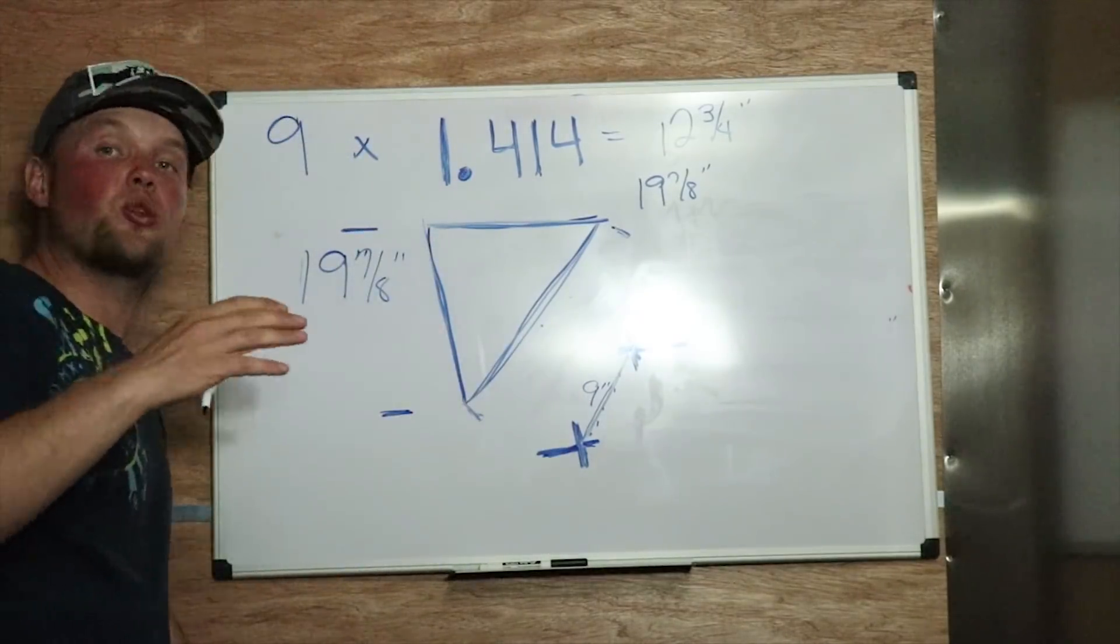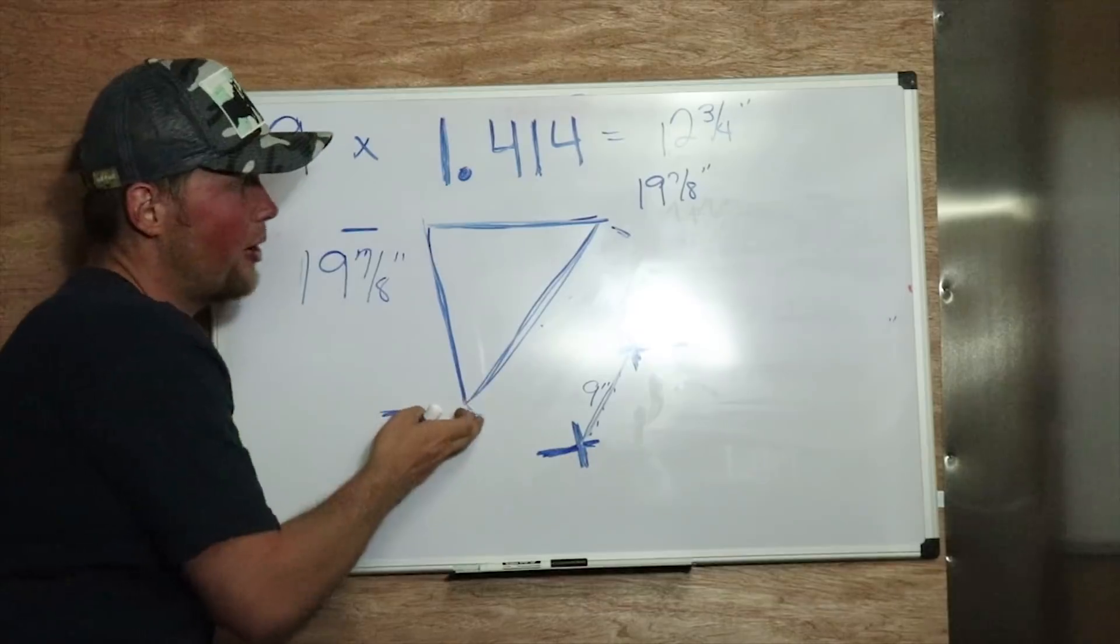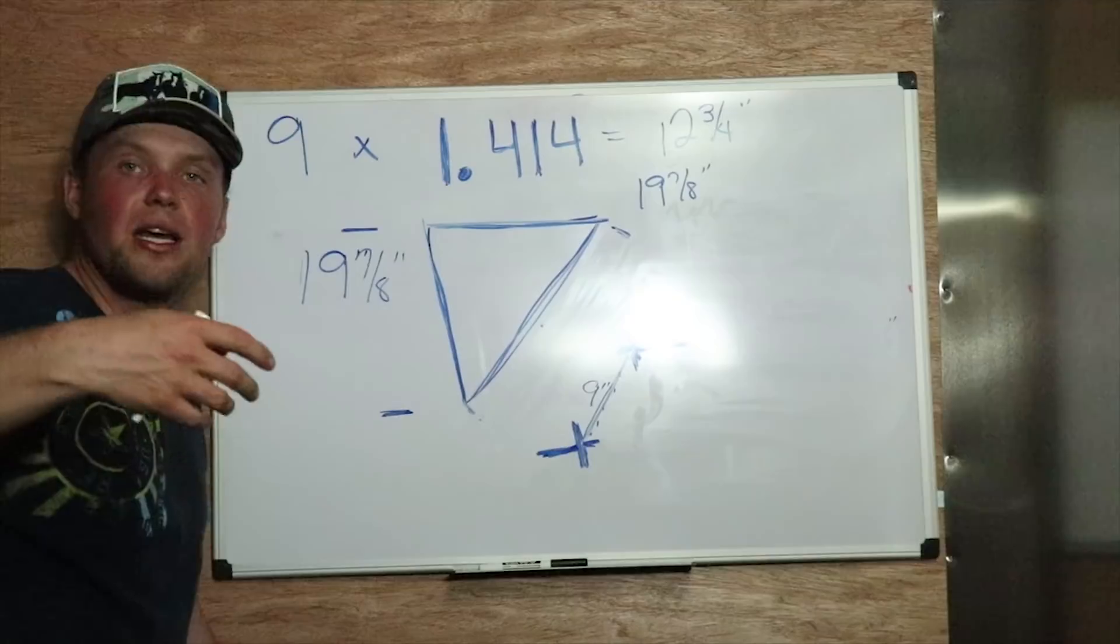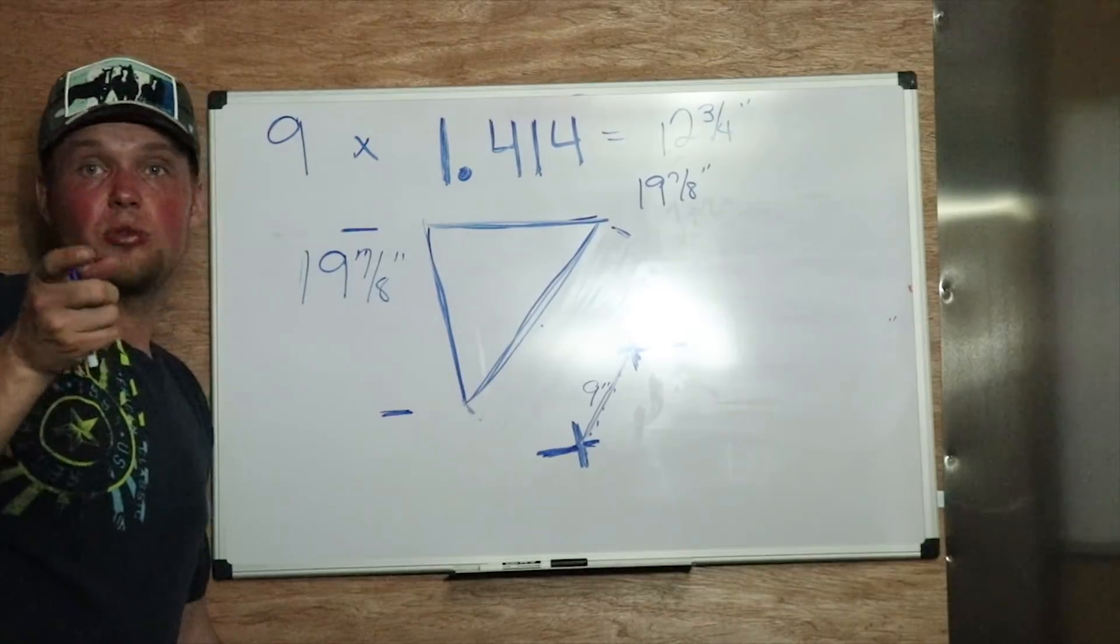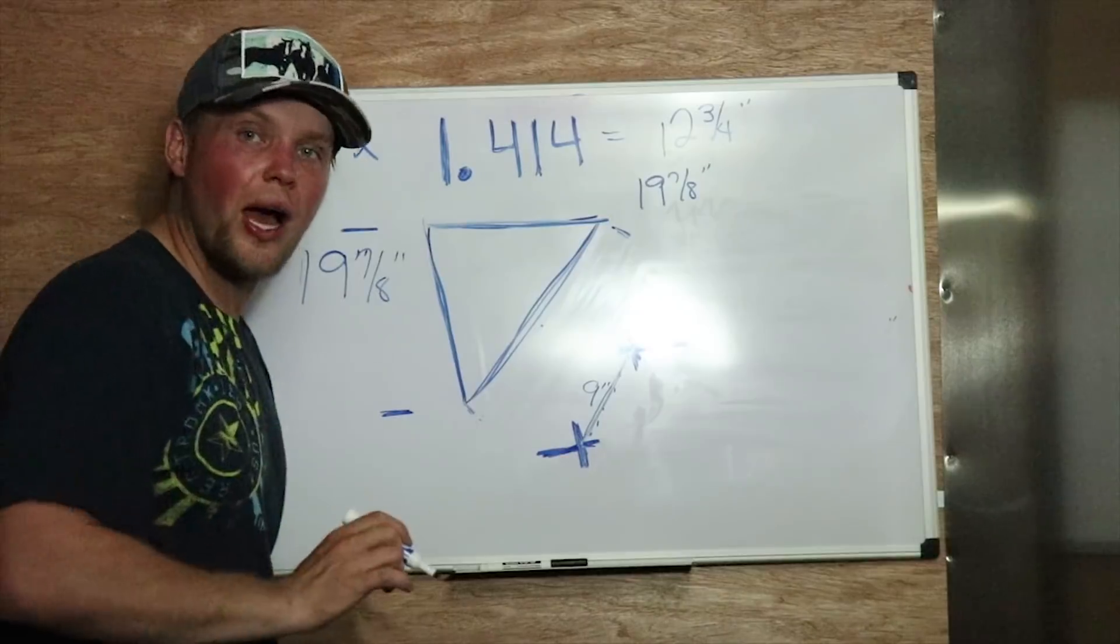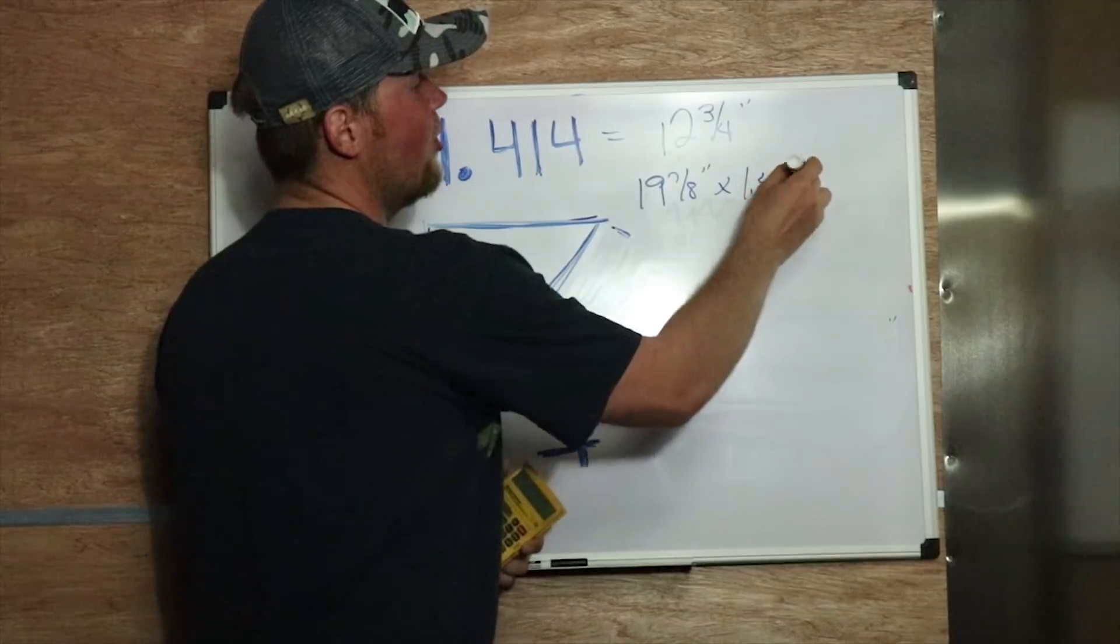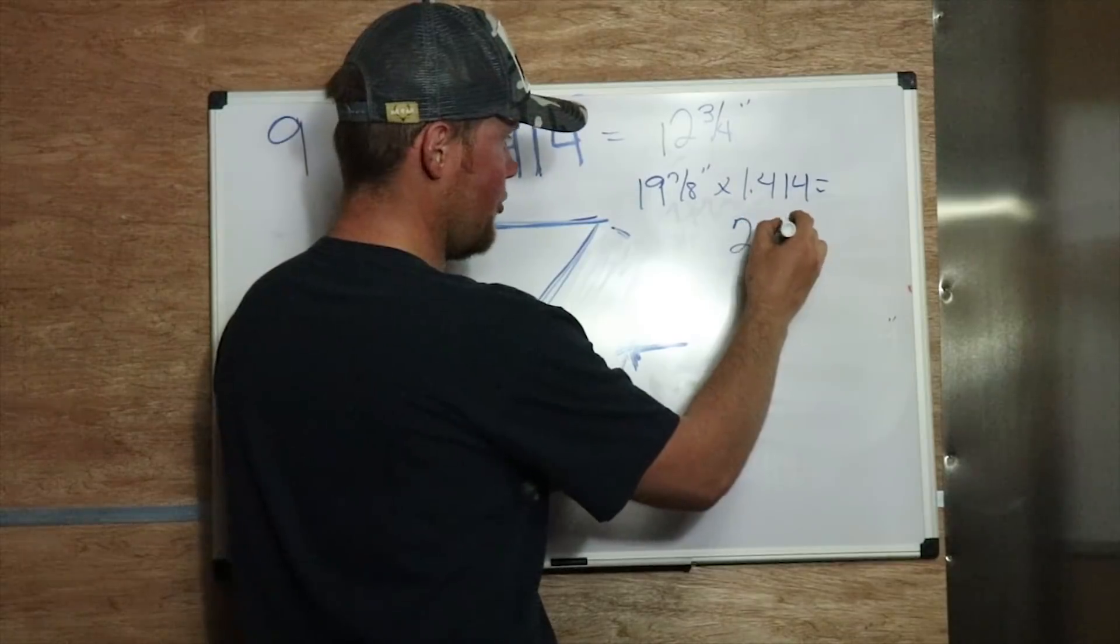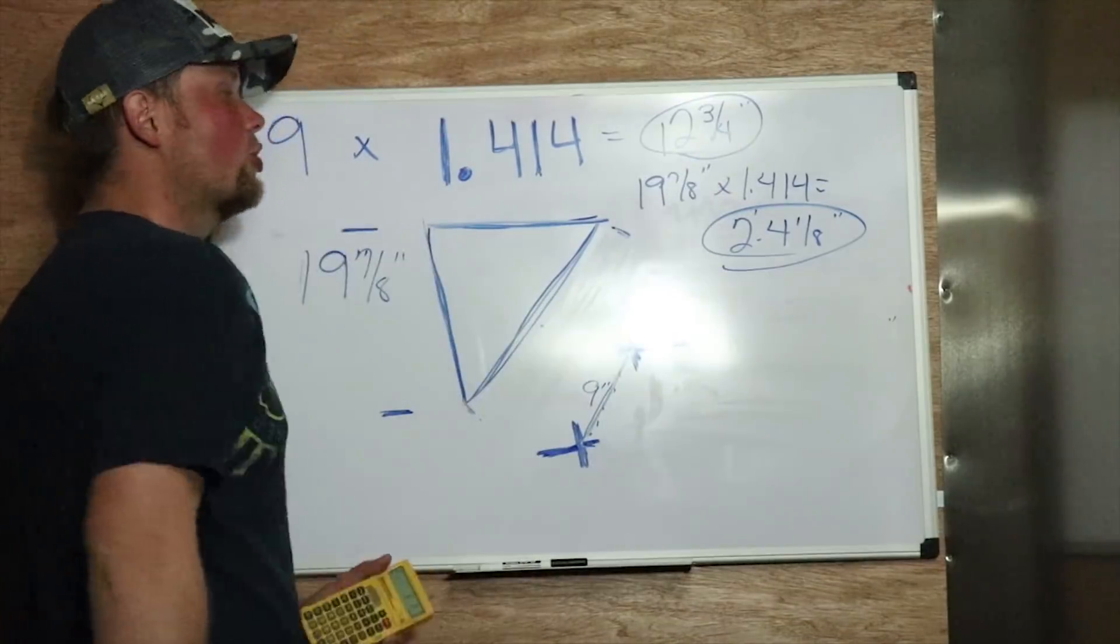Now we have a 28 and 1/8 inch pup, which in feet is 2 foot 4 and 1/8 inch pup. Nine times 1.414 is 12 and 3/4 inches. Now we're going to go 19 and 7/8 inches, which is going to be center of pipe to center of pipe elevation-wise. This is just your elevation. All you're trying to do is find a triangle, basically, coming from your center to center.